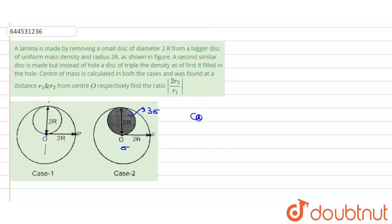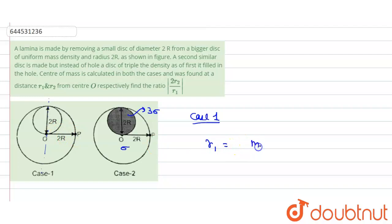In the first case, we are removing the mass. The position of the center of mass on the y-axis is r1. The formula for center of mass when removing mass is: (m1·y1 − m2·y2) / (m1 − m2). When adding mass, the sign in the numerator becomes positive.